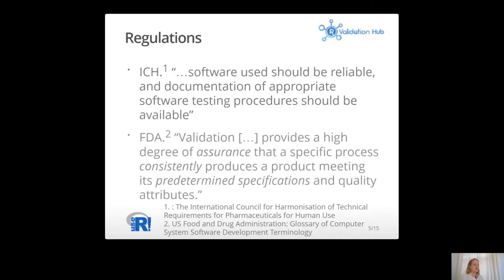On top of that, in the United States, the FDA has similar guidelines and further specifies validation as establishing documented evidence which provides a high degree of assurance that a specific process consistently produces a product meeting its predetermined specification and quality attributes. In other words, software validation needs to establish three things: accuracy, reproducibility, and traceability. The R Validation Hub focuses on accuracy, because reproducibility and traceability refer to the environment in which the statistical software is executed — meaning no difference between R and SAS.